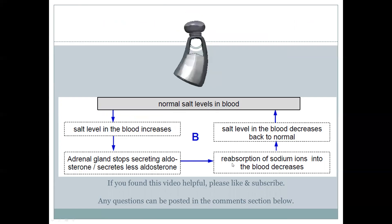The lack of aldosterone at the renal tubules of the kidney causes reabsorption of the sodium ions to decrease. Less salt being taken back and more salt being excreted results in the salt levels coming down and back to the normal level.